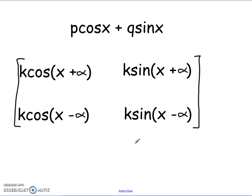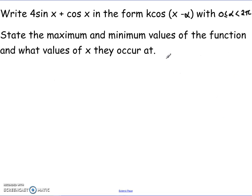Using these transformations, we're able to quickly transfer these over to see what they're like. The easiest way to show this is with an example. Imagine this question: write 4 sin x plus cos x in the form k cos(x minus α), with 0 ≤ α < 2π. State the maximum and minimum values of the function and what values of x they occur at.